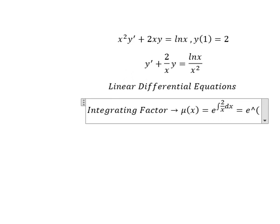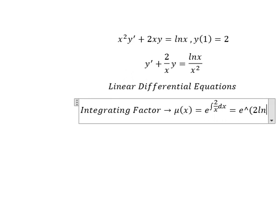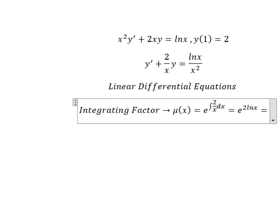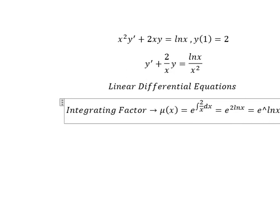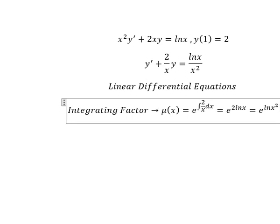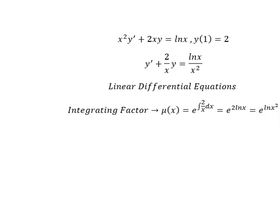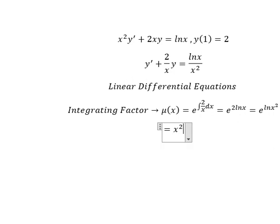And we have number 2 from f(x). That number 2 will go inside the natural log here. After simplifying we have x squared. That means we multiply both sides by x squared.